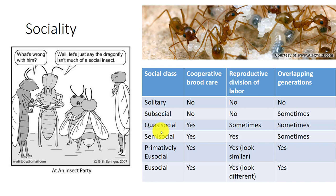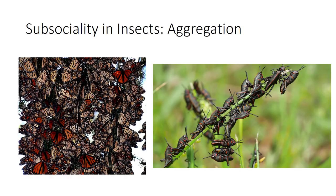In semi-social behavior, the communal nest is similar to quasi-social, but there is a division of labor with some females laying eggs—queens—but sisters rather than daughters act as workers. In primitively eusocial insects, the workers look the same as queens, with little or no morphological differences between the castes. Some sweat bees are primitively eusocial. Bumble bees are also primitively eusocial, although the queen is slightly larger than her workers.